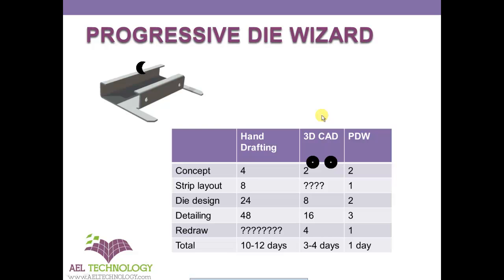Next, when technology advanced further and he started using Progressive Die Wizard, conceptually there is not much additional time saving, but in strip layout there are exclusively new tools for progressive die design. He can now use standard die bases by just one click, reducing a lot of design time in selection of die base and locating the strip layout. If the detailing process is standardized, it will definitely not take more than 3 to 4 hours. Redrawing has become very easy, so nowadays an engineer using Progressive Die Wizard can complete the entire design — from concept to releasing the drawing — within one day, meaning eight to ten hours.